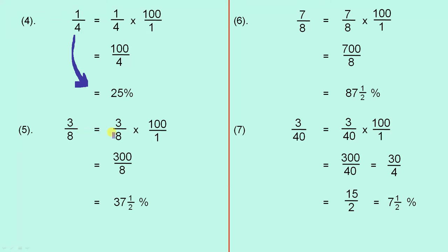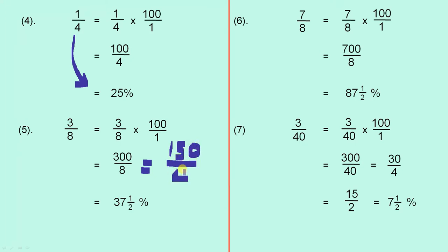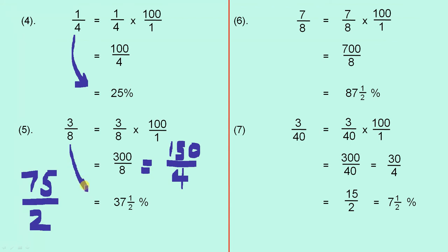Three over eight — now these are the interesting examples. We do the same rule: three over eight times one hundred over one, which gives us three hundred over eight. Now if you can't see straight away that that is thirty-seven and a half percent, just divide top and bottom by two to get a hundred and fifty over four. Then divide by two again to get seventy-five over two. We know that seventy-five over two is thirty-seven and a half. So three-eighths is thirty-seven and a half percent.